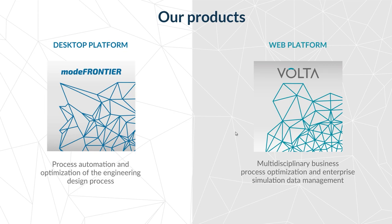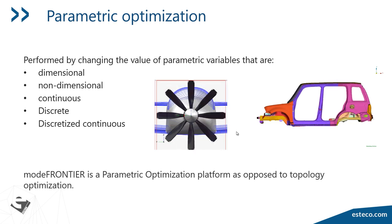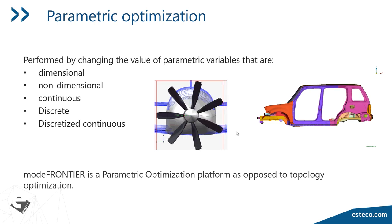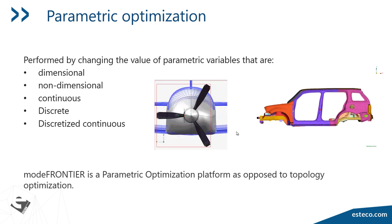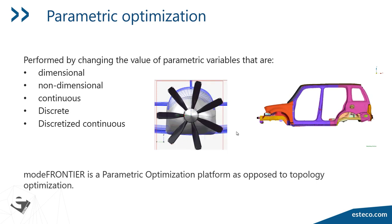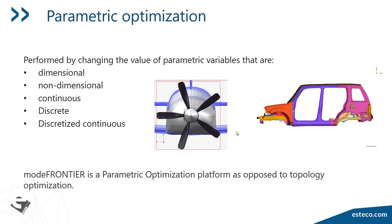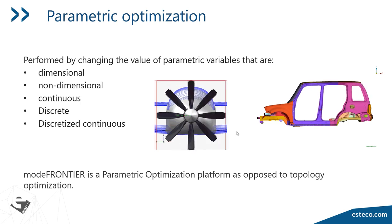Getting into parametric design optimization, we'll start with a brief introduction. What is it? Parametric optimization is a changing value somewhere in a solver. Here are some visual examples like the number of fins on a propeller. It can be discrete like that, or continuous — the height of a vehicle or the angle of a windshield. Just as a note, it's not topology optimization; that is a completely separate discipline.